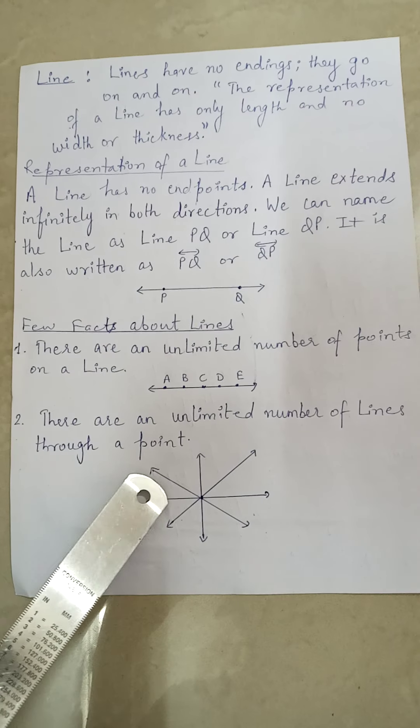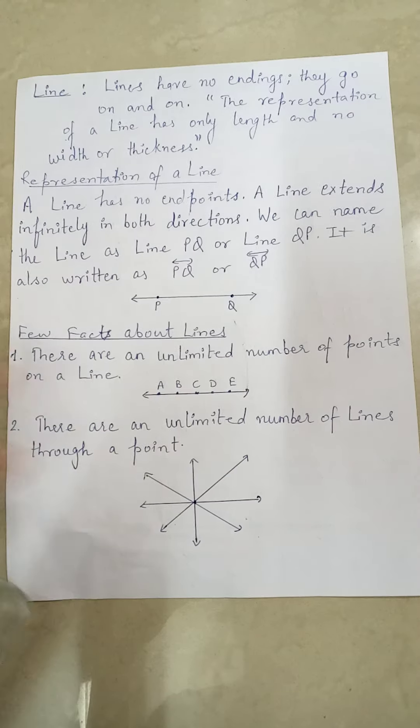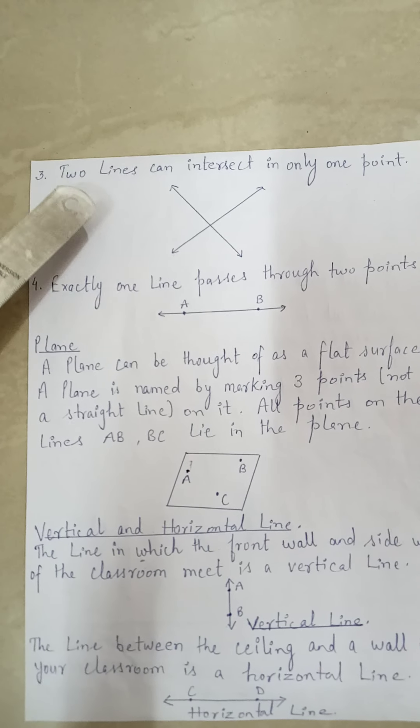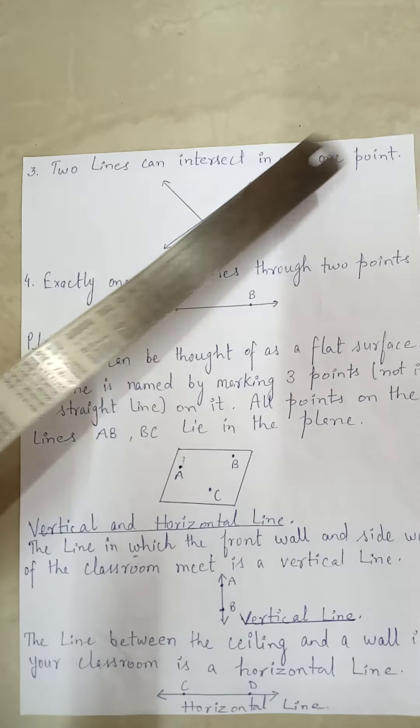The third fact: two lines can intersect at only one point. When we intersect two lines, they can intersect at only one point. Next: exactly one line passes through two points — so from any two given points, we can draw only one line.